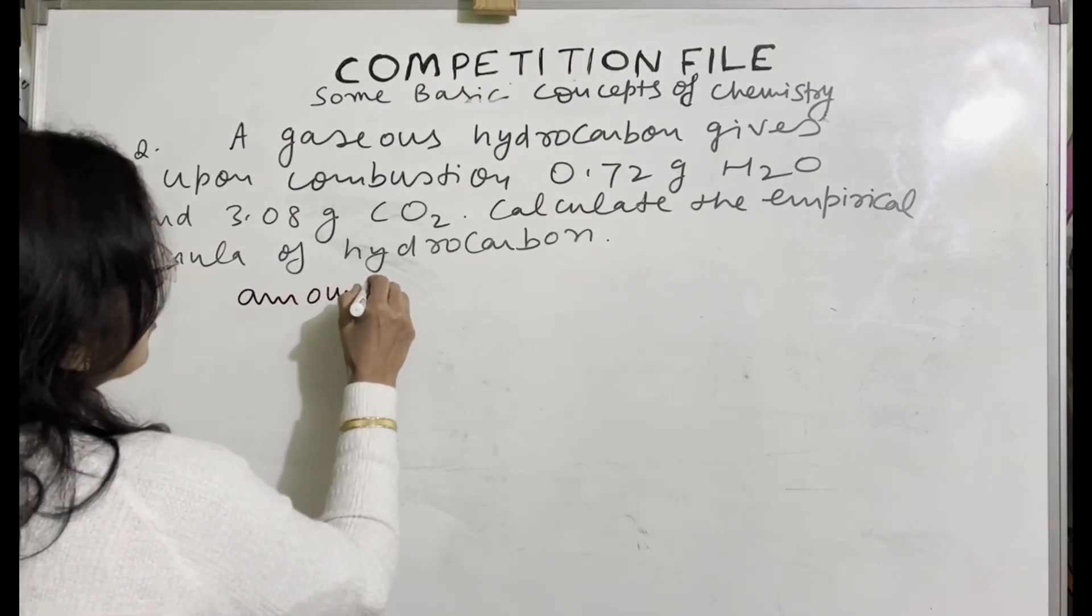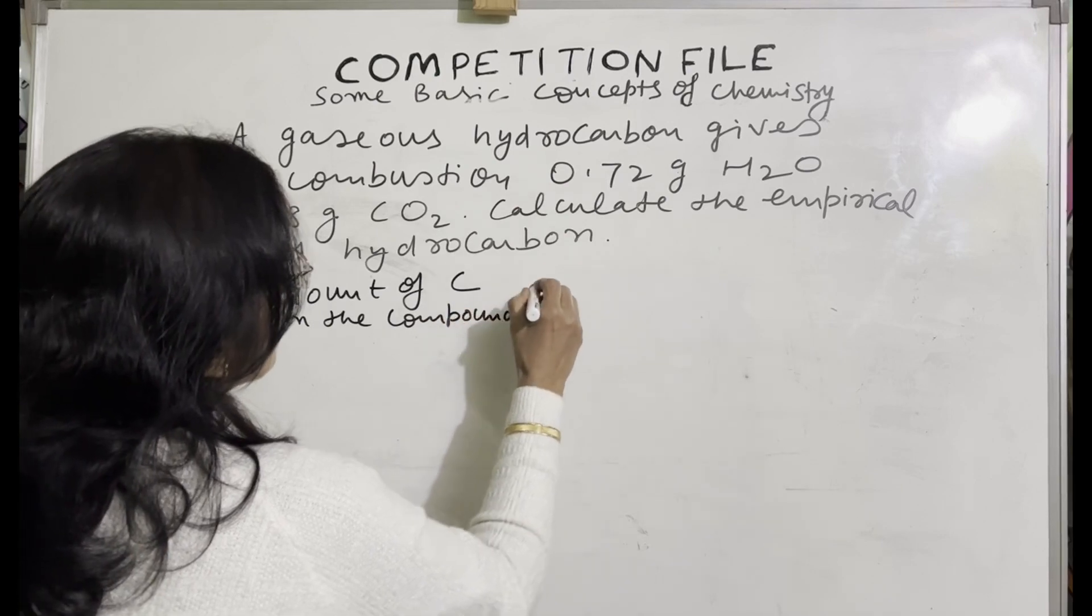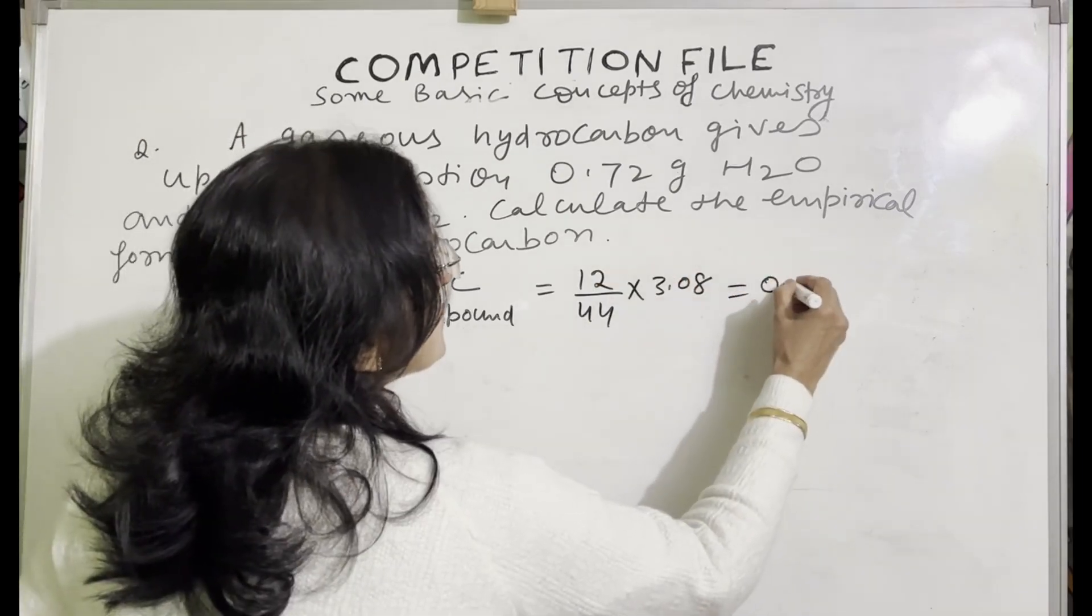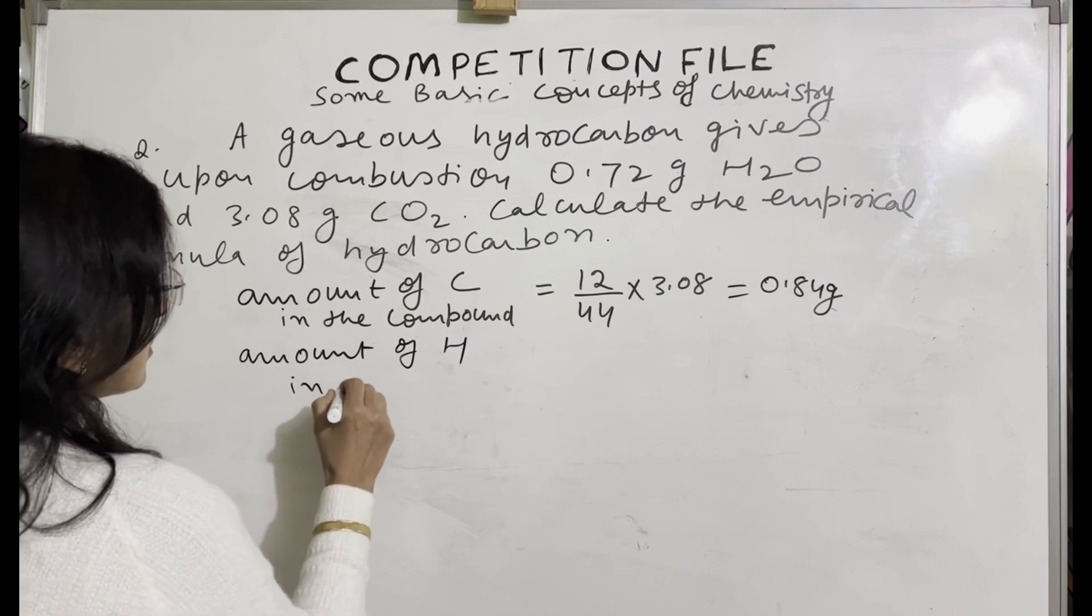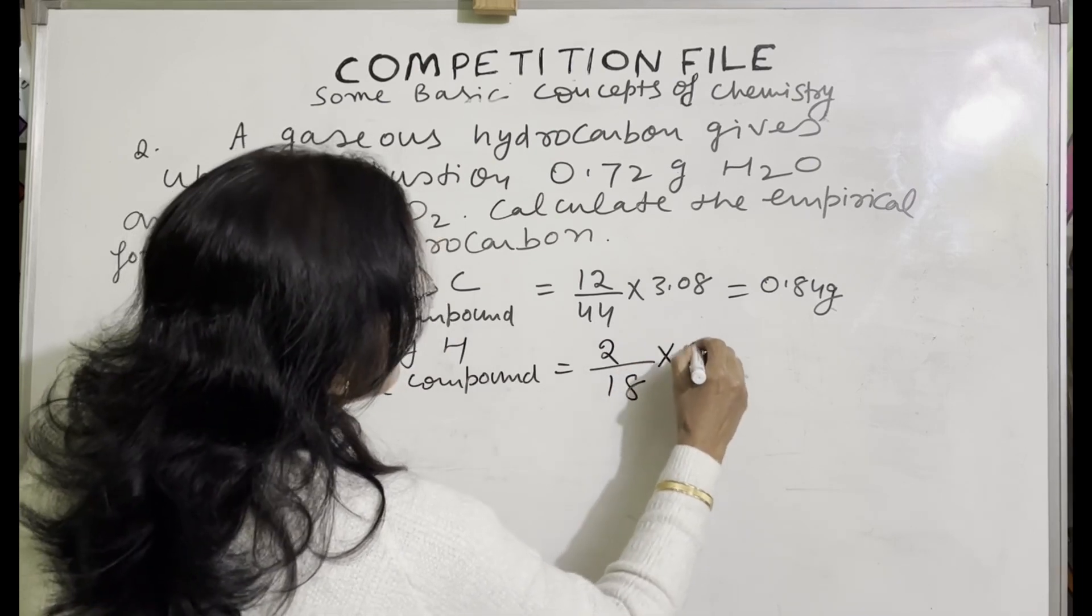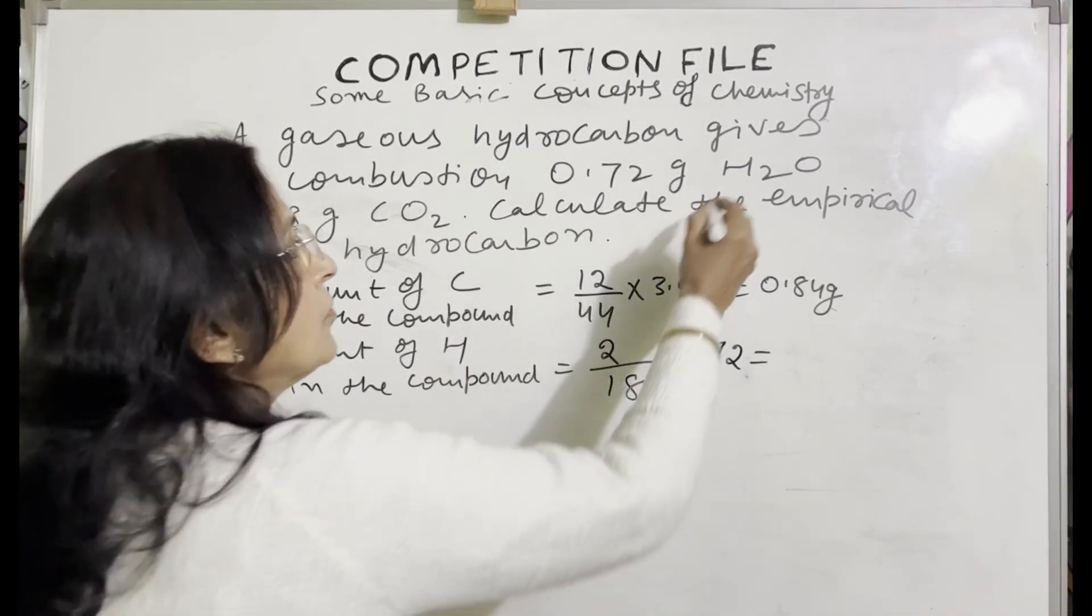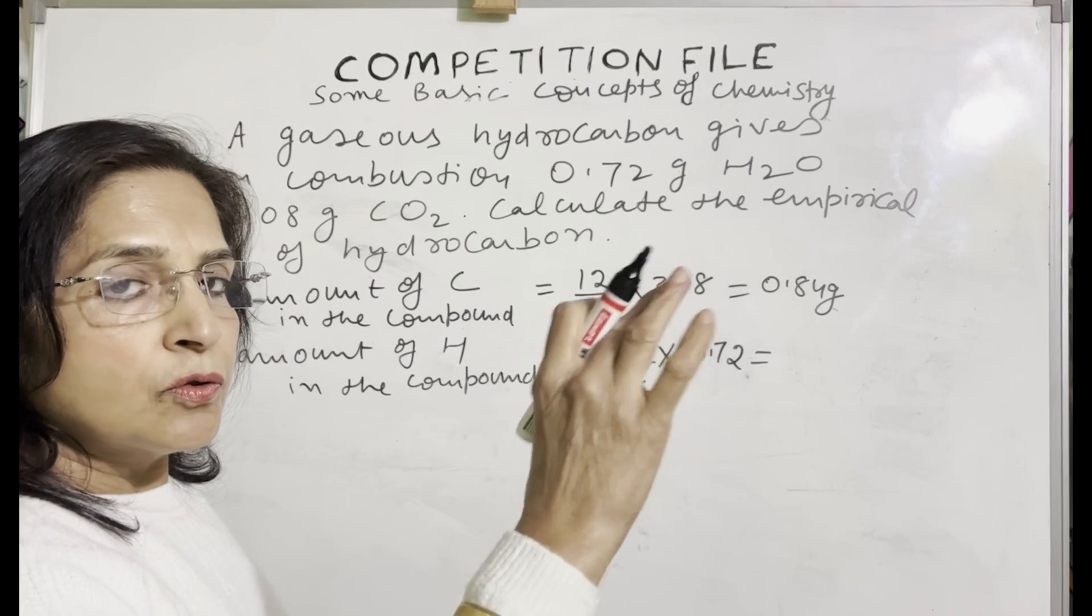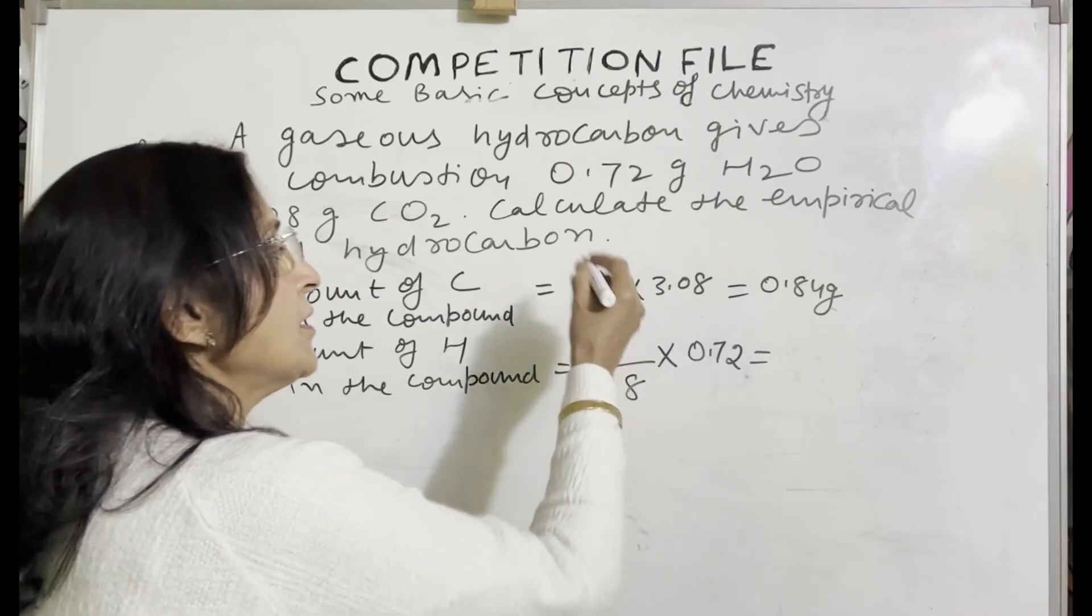First step is: amount of carbon in the compound is equal to 12 over 44 into 3.08. This value comes 0.84 grams. Amount of hydrogen in the compound is 2 by 18 into 0.72. Now calculate this. 18 is the molecular mass of water. In water, how much hydrogen is there? Two. In 1, it's 2 by 18, and in 0.72, how much hydrogen is there?